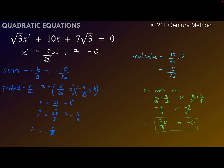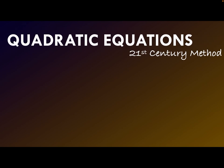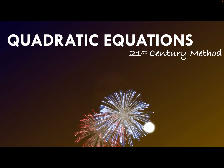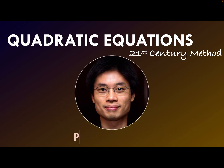Isn't this an interesting and easy method? We don't have to do long calculations of the square root of the discriminant, nor do we have to find the middle terms in the splitting-the-middle-term method. This method was recently discovered by an American mathematician, Po-Shen Loh. He said that the steps used in this method were already discovered by ancient mathematicians, and he just put all the steps together. I hope you enjoyed learning — thank you for watching.